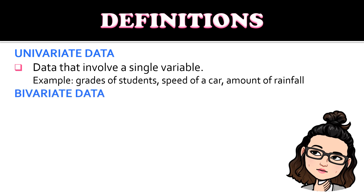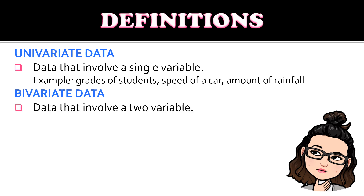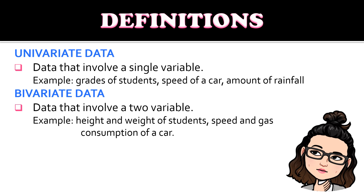Then we have bivariate data. The word 'bi' means two, therefore bivariate data means data that involves two variables. Examples would be height and weight of students, and speed and gas consumption of a car.